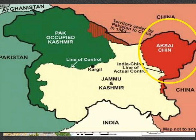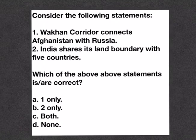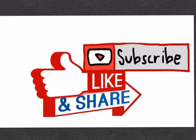Before thinking in terms of reclaiming territory by force, a lot needs to be done on the policy front. First, we need to reshape and strengthen our policy on POK to support India's legitimate claim. There is also a need to create awareness regarding India's claim over POK at both the international and domestic levels. If reclaimed, POK shall give India unfettered access to Afghanistan and, more importantly, to Central Asian markets. Based on today's discussion, consider this question: Statement 1 — Wakhan Corridor connects Afghanistan with Russia. Statement 2 — India shares its land boundary with 5 countries. Which is or are correct? You can comment your answers below. Thank you.